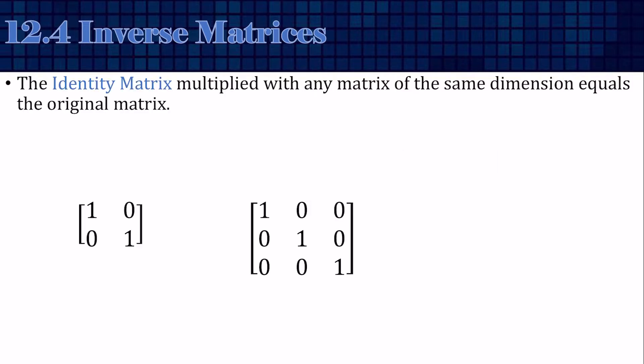The identity matrix multiplied with any other matrix of the same dimension equals the original matrix. So matrix A times the identity, or the identity times matrix A, equals just matrix A. It's like multiplying by 1, so it's the matrix equivalent of 1, and here are two examples.